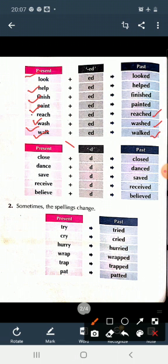Now see next example. Close. अब इन सभी words के end में E लगा हुआ है. इसलिए अब हम ED न लगा कर सिर्फ D add करेंगे. Close, closed. Dance, danced. Save, saved. Receive, received. Believe, believed.